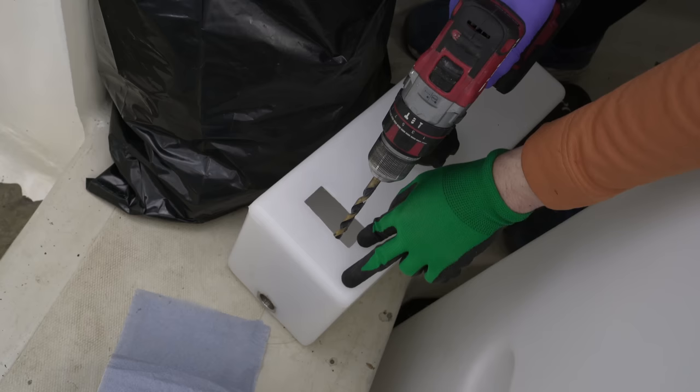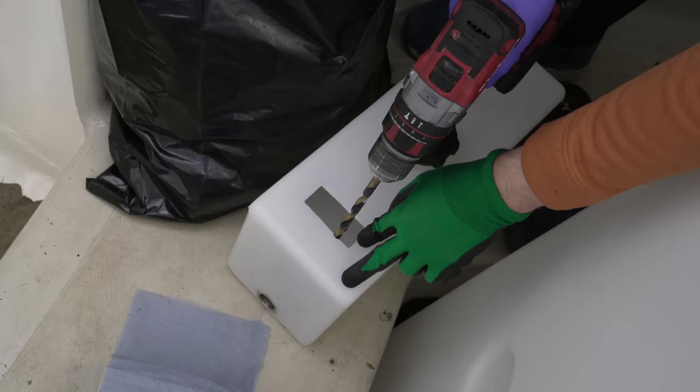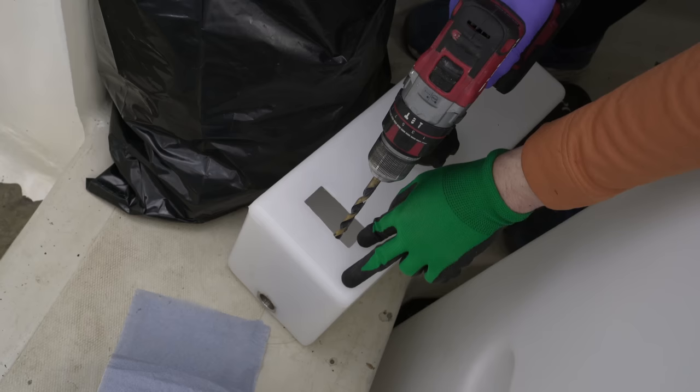Firstly, I'm cleaning up the edges of the heater tank access hatch hole with a knife, and then checking I can get a spanner inside and actually use it. Then a neat little hole for the standpipe to mount through.